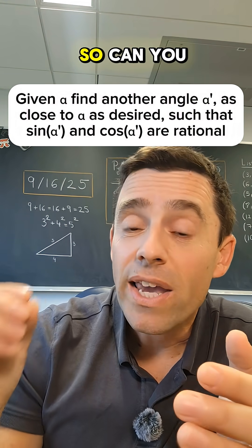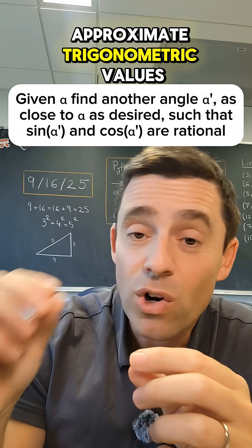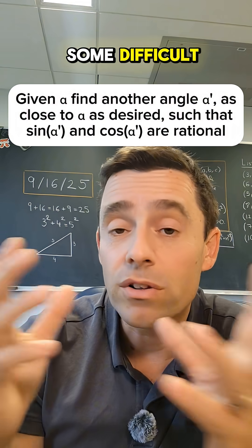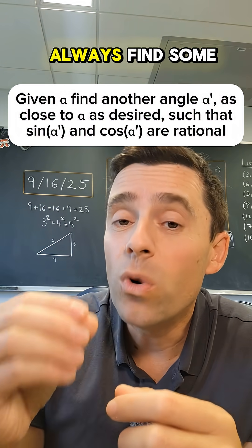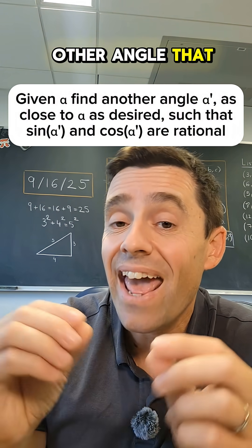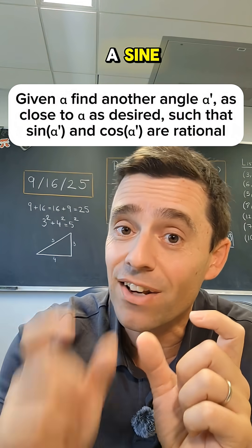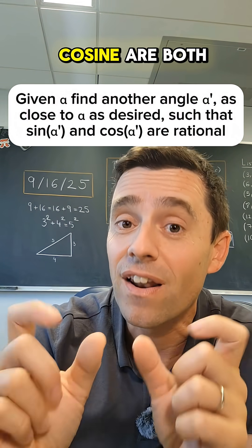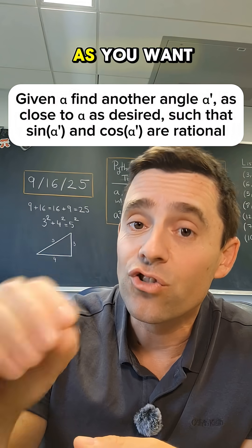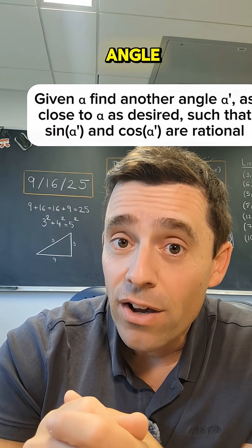So can you approximate trigonometric values that are maybe some difficult real number, but can you always find some other angle that has rational values simultaneously? Not just the sine, not just the cosine, but sine and cosine are both rational numbers and as close as you want to the original angle?